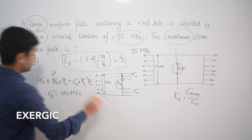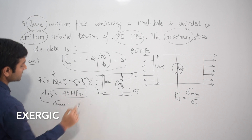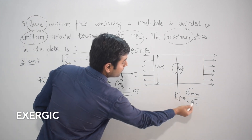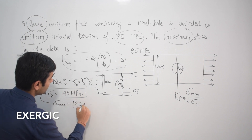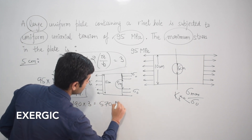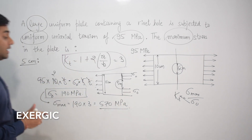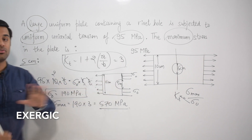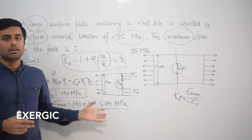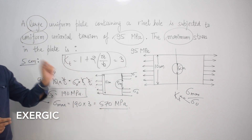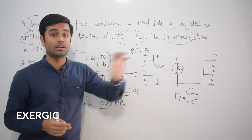From the nominal stress, the maximum stress = sigma_0 × kt = 190 × 3 = 570 MPa. This is the maximum stress value when the hole diameter is taken as 5 cm. However, this answer is not among the given options, and there is a fundamental problem with this assumption.